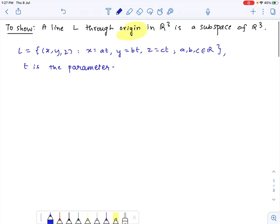Clearly 0 belongs to L because the line passes through the origin and suppose we have two points (x, y, z) and (u, v, w) belonging to L.